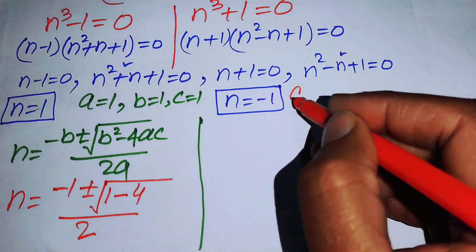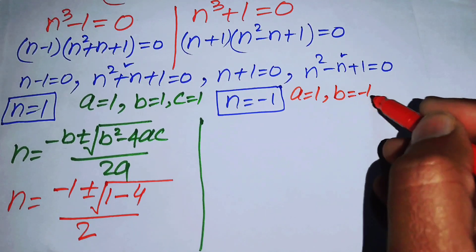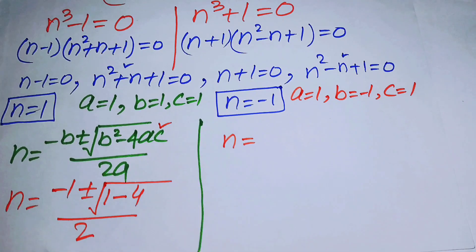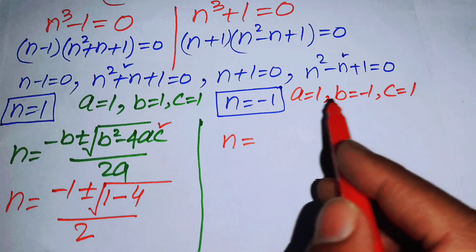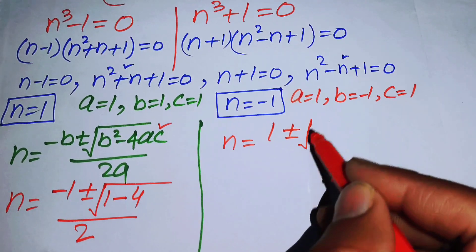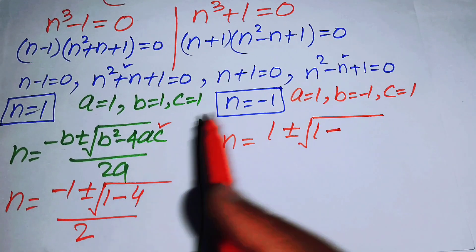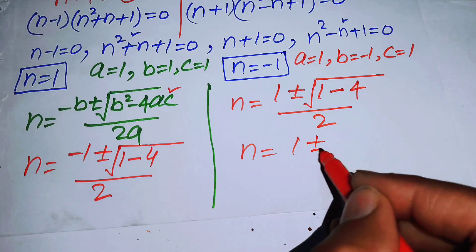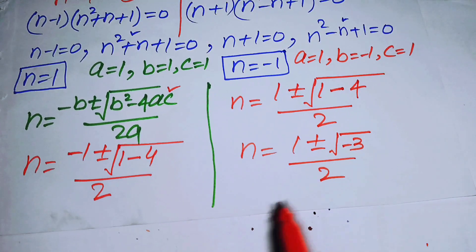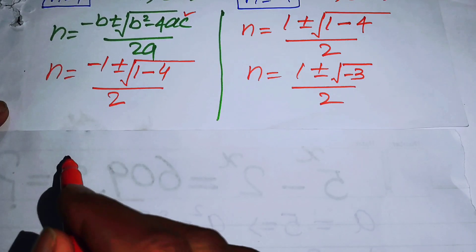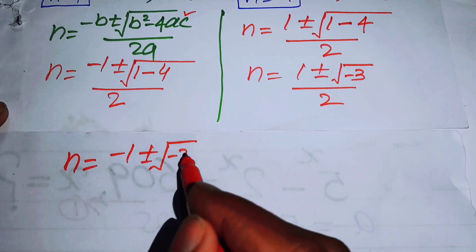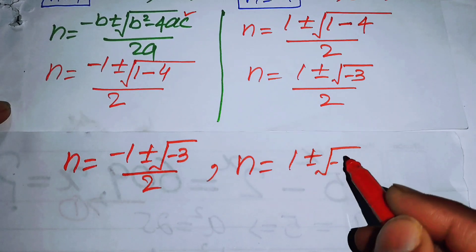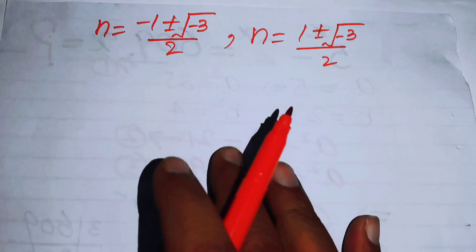For the second quadratic n^2 - n + 1 = 0, the coefficients are a = 1, b = -1, c = 1. Substituting into the quadratic formula gives n = (1 ± √(1 - 4)) / 2 = (1 ± √(-3)) / 2. Since we have a negative value inside the square root, these will be complex roots.